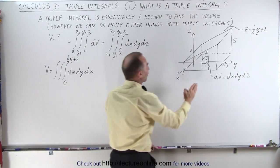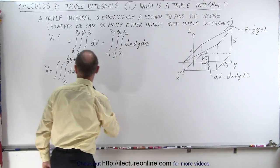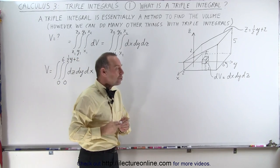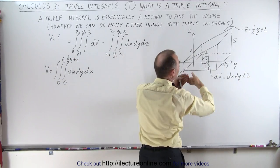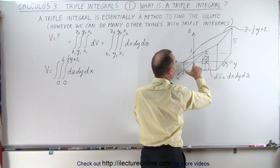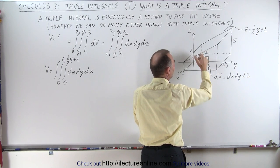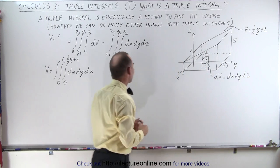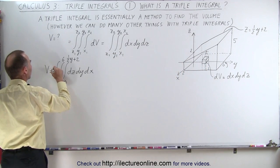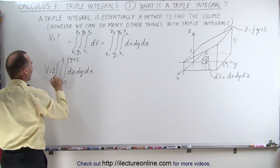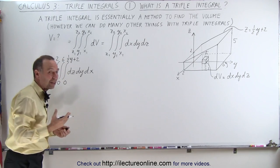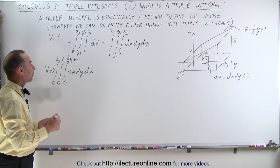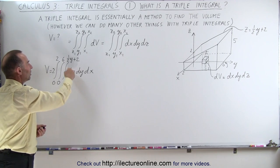The y limits go from 0 to 6. For the x limits, since the wedge straddles the y-axis with two units on each side, we can integrate x from 0 to 2 and simply multiply by 2 to get the entire volume. So we put a 2 in front and have x limits from 0 to 2 — that's the same as going from −2 to 2 without the factor of 2. Now we integrate dz first.